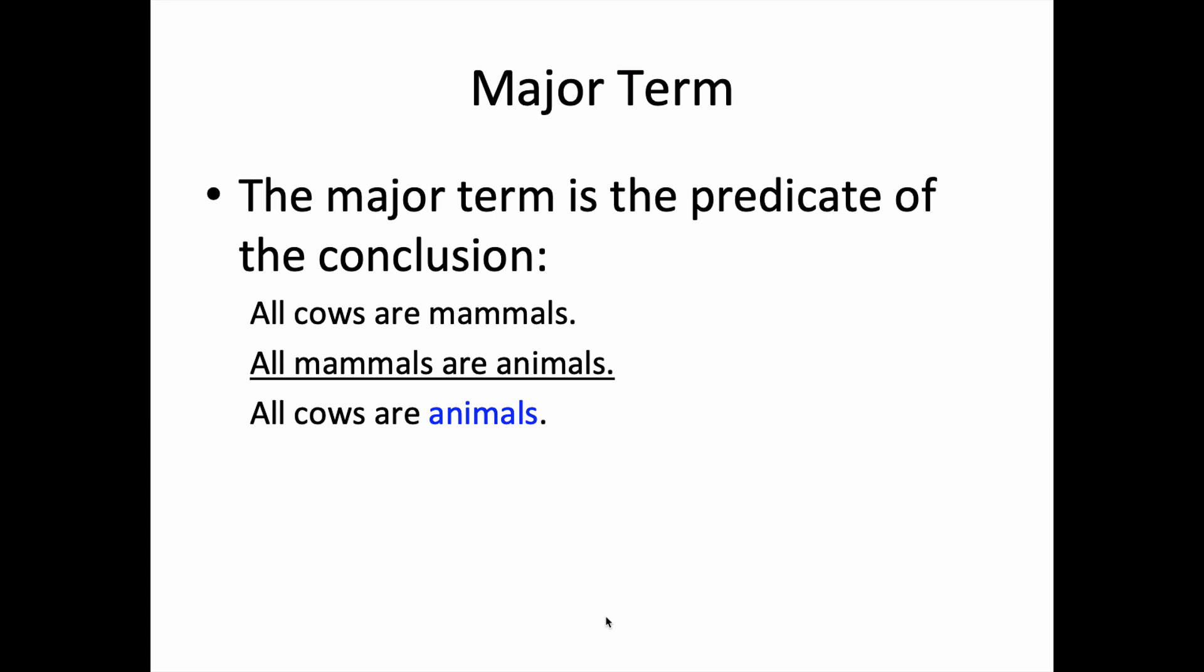The major term is the predicate of the conclusion. So you find the conclusion and you look for the predicate, the grammatical predicate. Another way to put it is you look for the predicate term. In this case, the conclusion, all cows are animals, has the predicate term animals. That's the major term.